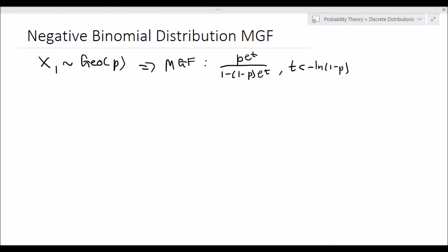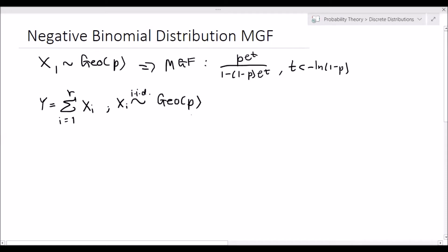If you don't recall how to derive this, please refer to my video covering the moment generating function of the geometric distribution. From the introduction to the negative binomial distribution, recall that if we let Y equal the summation from i equals 1 to r of xᵢ, where each xᵢ is independently and identically distributed as geometric random variables with success probability p, then Y follows the negative binomial distribution with r successes and success probability p.